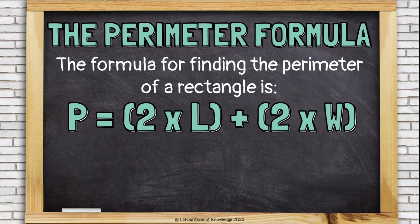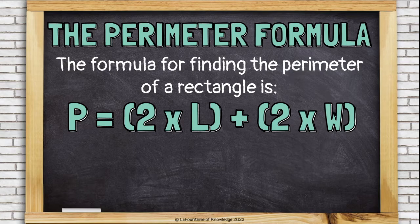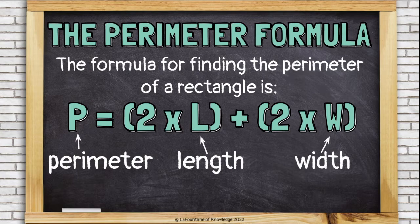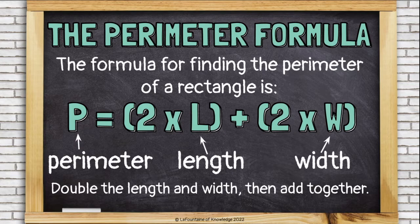Let's look at the perimeter formula. P equals 2 times L plus 2 times W. So P stands for perimeter. L is still length and W is still width. So basically here, we are doubling the length and the width. Multiplying by 2 is doubling. And then we're just adding them together.